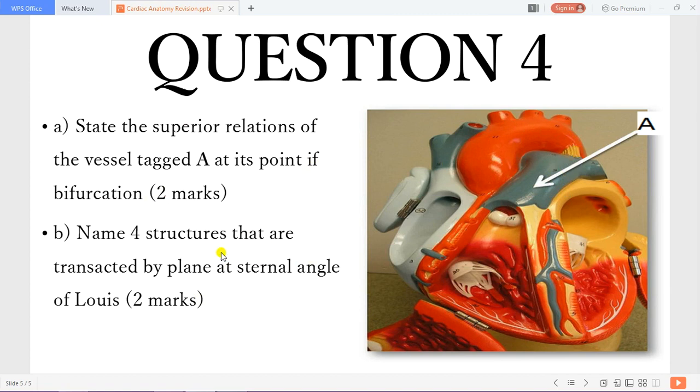The structures that are transected by the plane at the sternal angle. We start from the glandular plane which has the thymus gland. We have the venous plane which has the superior vena cava. We have the arterial plane which has the arch of the aorta and its branches.